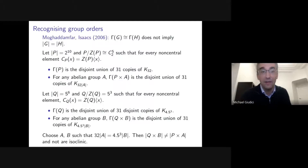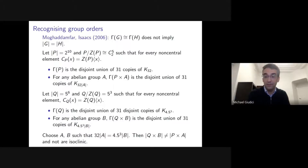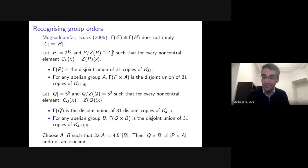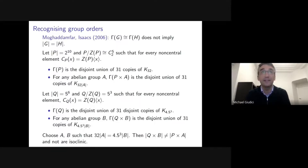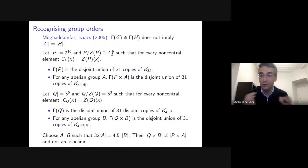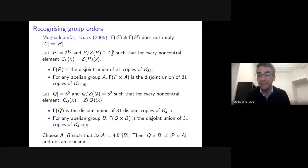So if the commuting graphs are isomorphic, the groups don't have to have the same order and they don't have to be isoclinic. That said, it remains a possibility that two groups of the same order with isomorphic commuting graphs must be isoclinic — that question is still open. This situation arises because throwing away the center can make the commuting graphs identical even for structurally different groups.